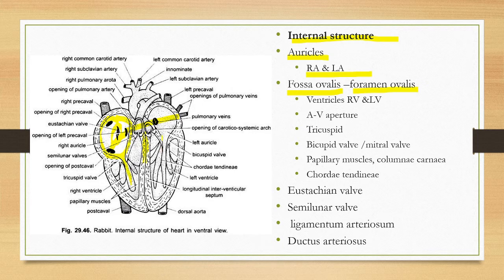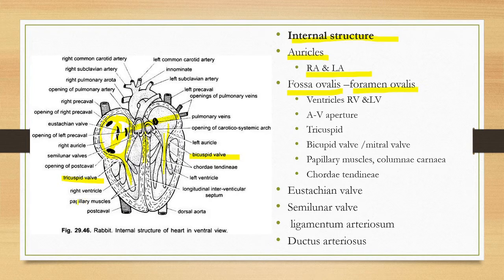The most important openings are the auriculo-ventricular openings. The right side is called the right auriculo-ventricular opening and the left side is called the left auriculo-ventricular opening. The right side is guarded by the tricuspid valve and the left side is guarded by the bicuspid valve.